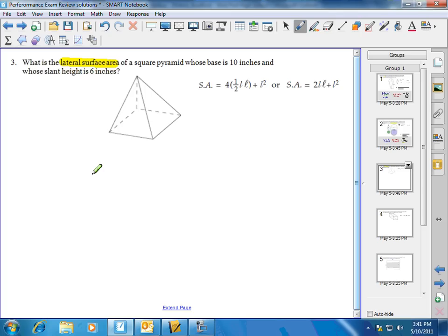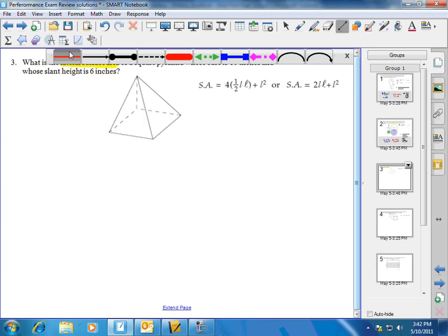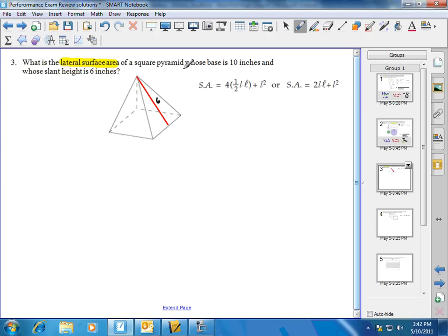So in this case for this pyramid, we're looking for the surface area of all the triangular faces. We're told that we have a slant height of 6 inches, so we need to remember that the slant height refers to the altitude of the triangular face, and again that's 6 inches. We're told the base is 10 inches, so the length of the base is 10 inches - the length of the square base which is also the length of the base of the triangle.